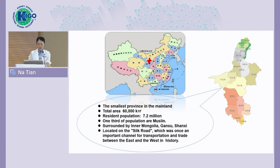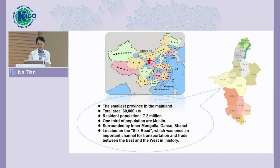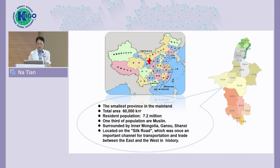The total area of Ningxia is only 60,000 square kilometers and the resident population is only 9.2 million. Our hometown is an area where many Muslims have gathered — about one-third of the population are Muslim people. Our province is surrounded by Inner Mongolia, Gansu, and Shanxi. In ancient times, it was located on the Silk Road, which was once an important channel for transportation and trade between the east and the west.